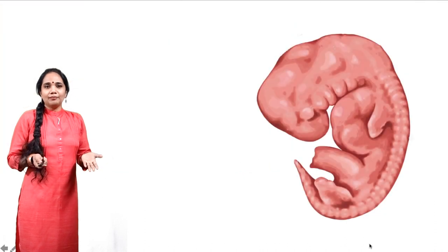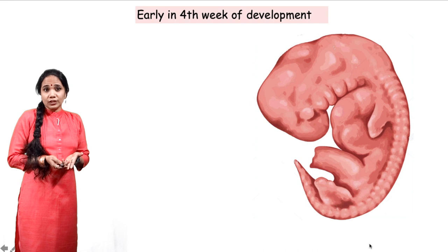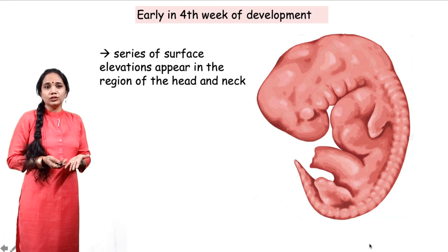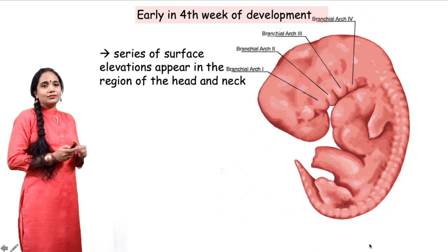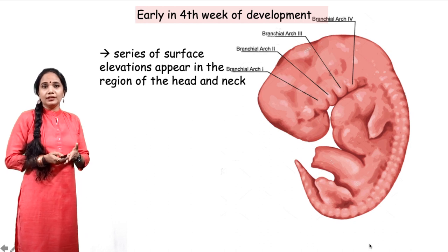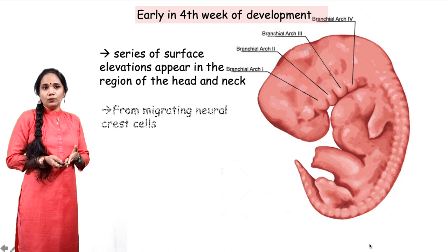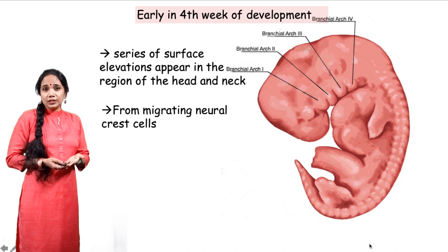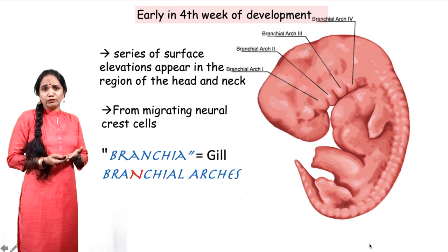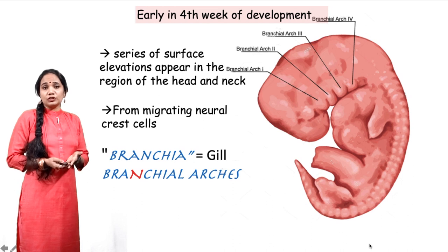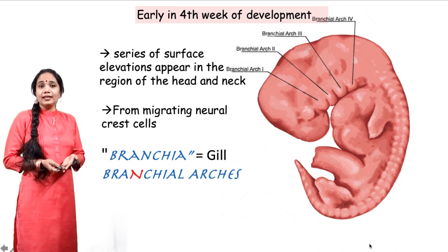The pharyngeal apparatus starts developing early in the fourth week of embryo development, beginning as a series of surface elevations appearing in the region of the head and neck. We can see four surface elevations numbered branchial arch 1, 2, 3, and 4. These arches develop from migrating neural crest cells which reach the head and neck region. Since they appear very similar to the gills of fish, they are called branchia — from the Greek word for gill — and therefore they are also called branchial arches.